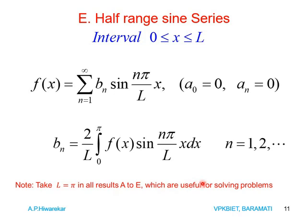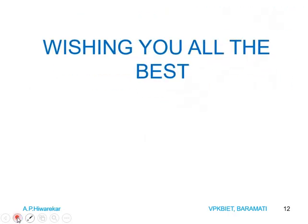In all of the above cases, if you set L = π, you get similar results — wherever there is L, substitute π, and you will get all other results including the Fourier series for the interval −π to +π as well as C to C + 2π. With this, I wish you all the best — thank you.